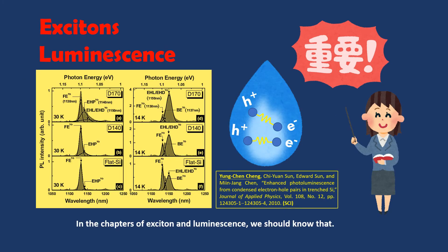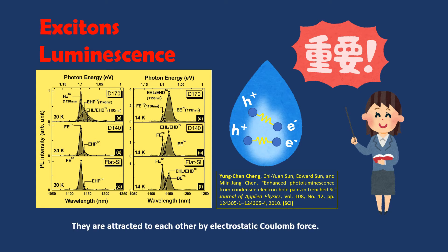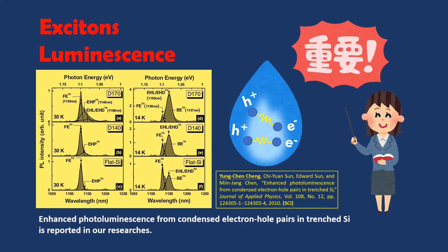In the chapters of Excitons and Luminescence, we should know that an exciton is a bound state of an electron and a hole. They are attracted to each other by electrostatic Coulomb force. Strong excitonic luminescence can be observed at low temperatures in semiconductors. Enhanced photoluminescence from condensed electron-hole pairs in strained silicon is reported in our research.